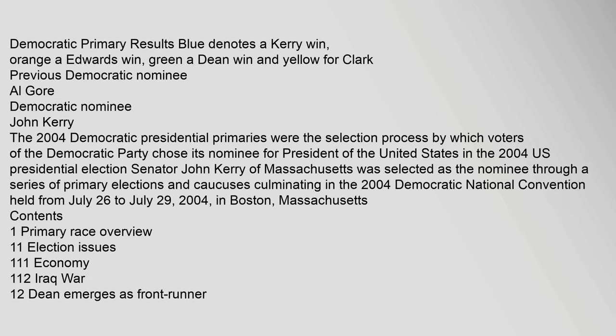Democratic primary results: blue denotes a Kerry win, orange an Edwards win, green a Dean win, and yellow for Clark. Previous Democratic nominee Al Gore. Democratic nominee John Kerry.